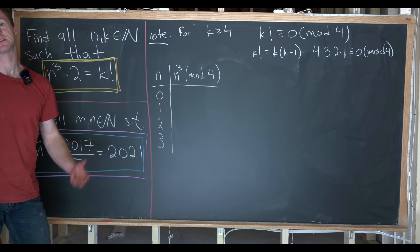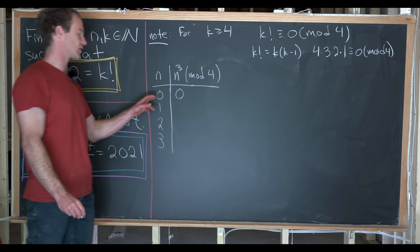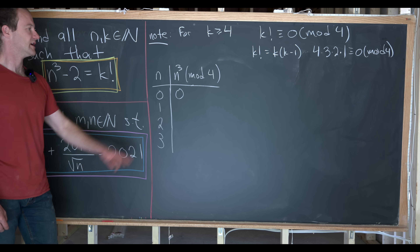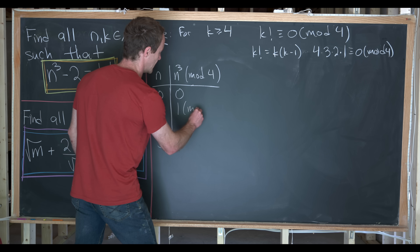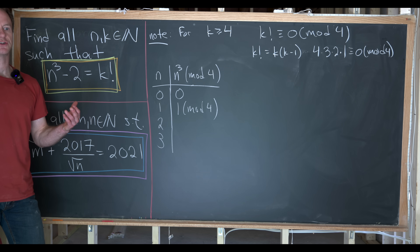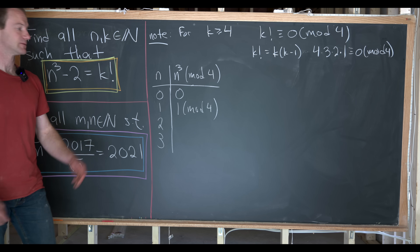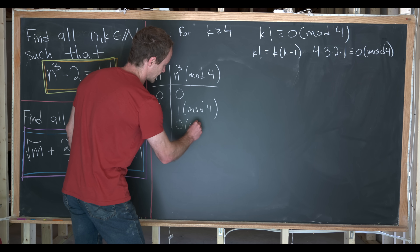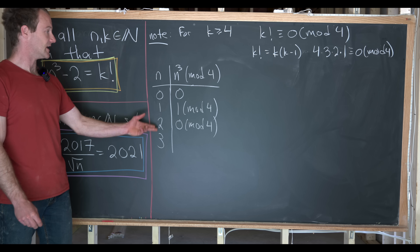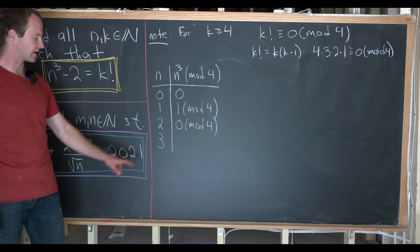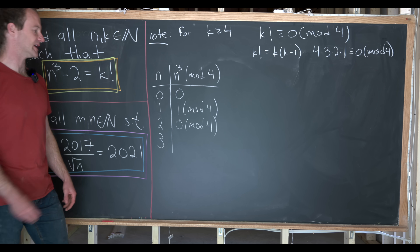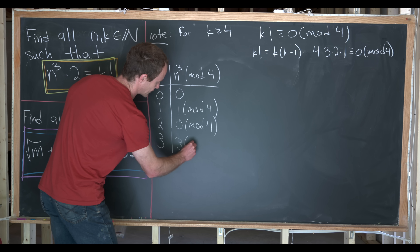0 cubed is 0 mod 4 — if n is a multiple of 4, then n cubed is a multiple of 4. If n is congruent to 1 mod 4, then n cubed is also congruent to 1 mod 4. If n is congruent to 2 mod 4, then n cubed is congruent to 8 mod 4, and since 8 is a multiple of 4, we get 0 mod 4. Finally, if n is congruent to 3 mod 4, then n cubed is also 3 mod 4 — we can see this quickly by noting that 3 is congruent to negative 1 mod 4, and negative 1 cubed is negative 1, which is the same as 3 mod 4.